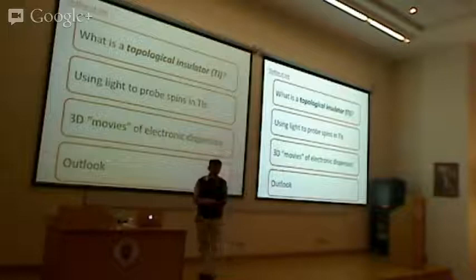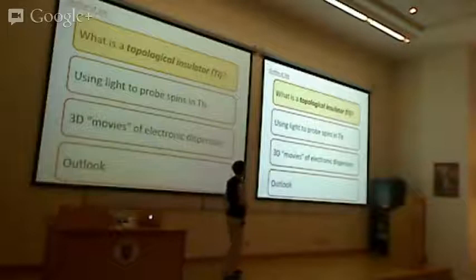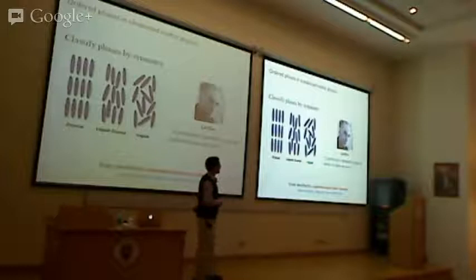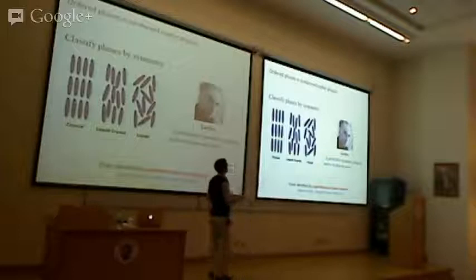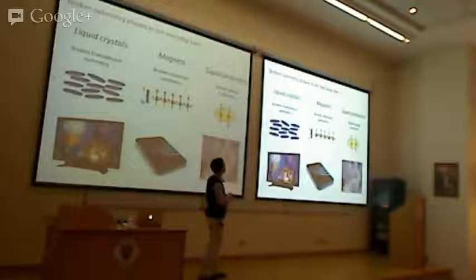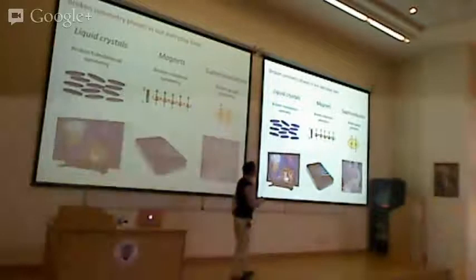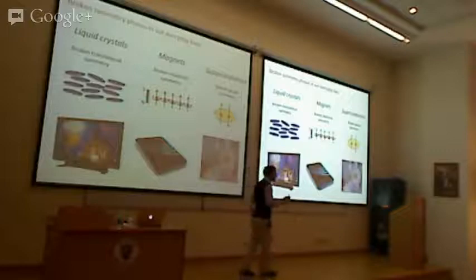When we talk about different phases of matter, we use the paradigm introduced by Landau. He said that whether or not a particular symmetry is broken defines what phase you have. In a liquid crystal you have broken translational symmetry, in a magnet broken rotational symmetry, in superconductors broken gauge symmetry. Every conventional phase of matter is associated with a broken symmetry. A topological insulator does not fit this conventional paradigm — there is no symmetry that's broken.